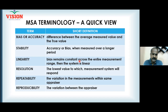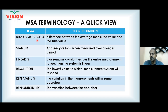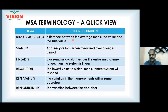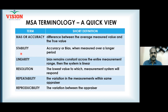Bias is sometimes called accuracy. When bias is zero, you are fully accurate; when there is a bias, you become inaccurate. Bias is basically the difference between the average of the measured value and the true value.